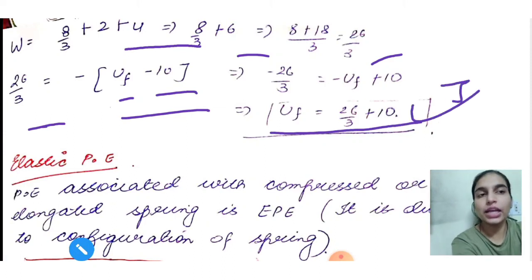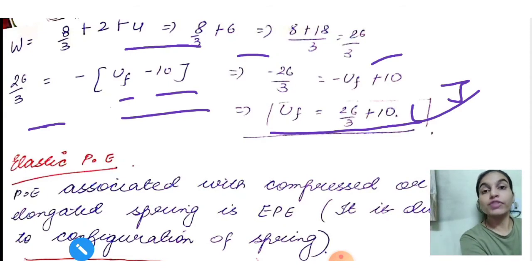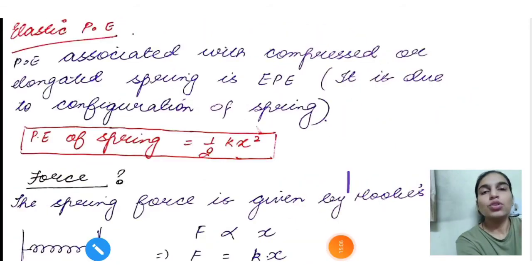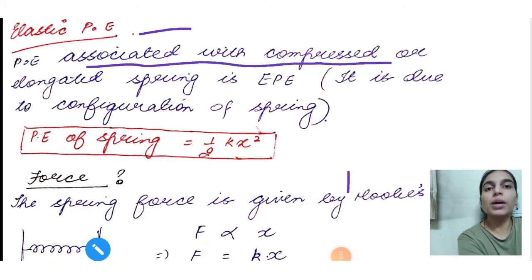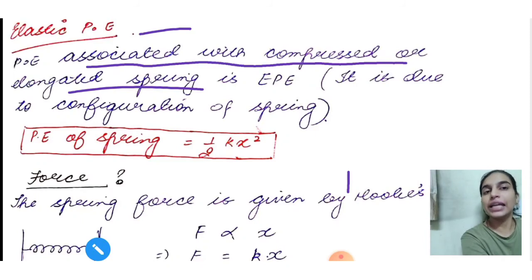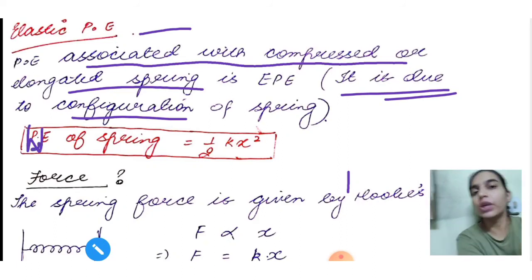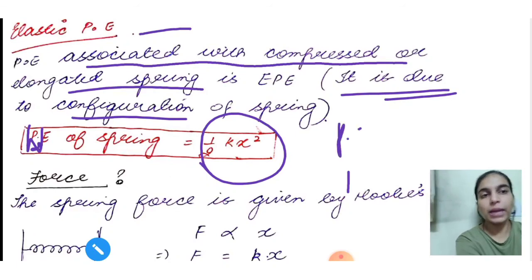This was about gravitational potential energy when considering heights very close to Earth's surface — potential energy due to position. Now we move to elastic potential energy, which is due to the configuration of the system. Elastic potential energy is the potential energy associated with a compressed or elongated spring. When you compress or elongate a spring, the stored energy is elastic potential energy, given by the formula ½kx².